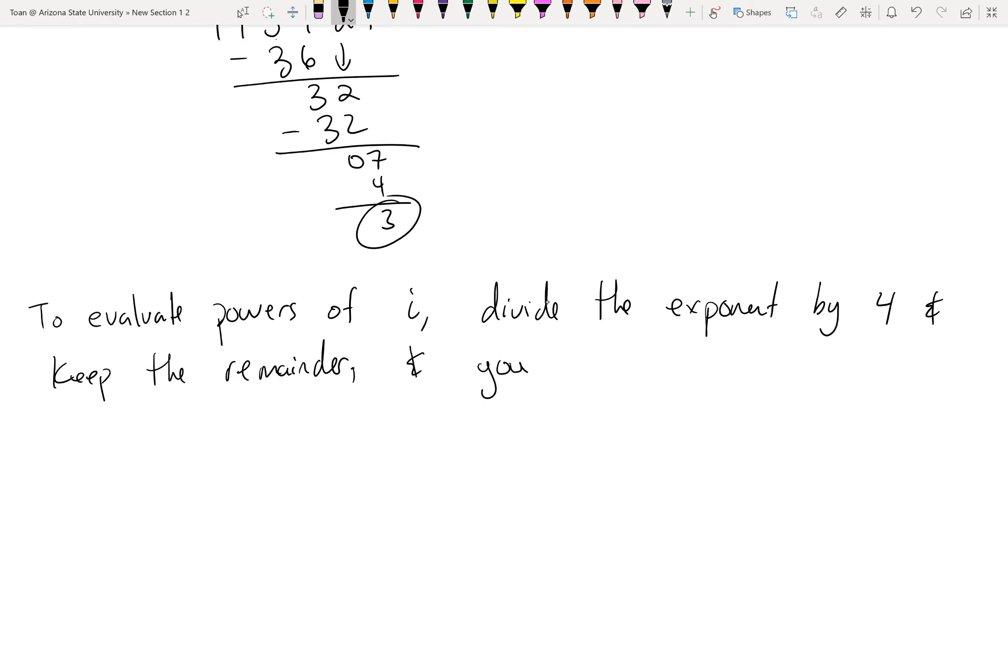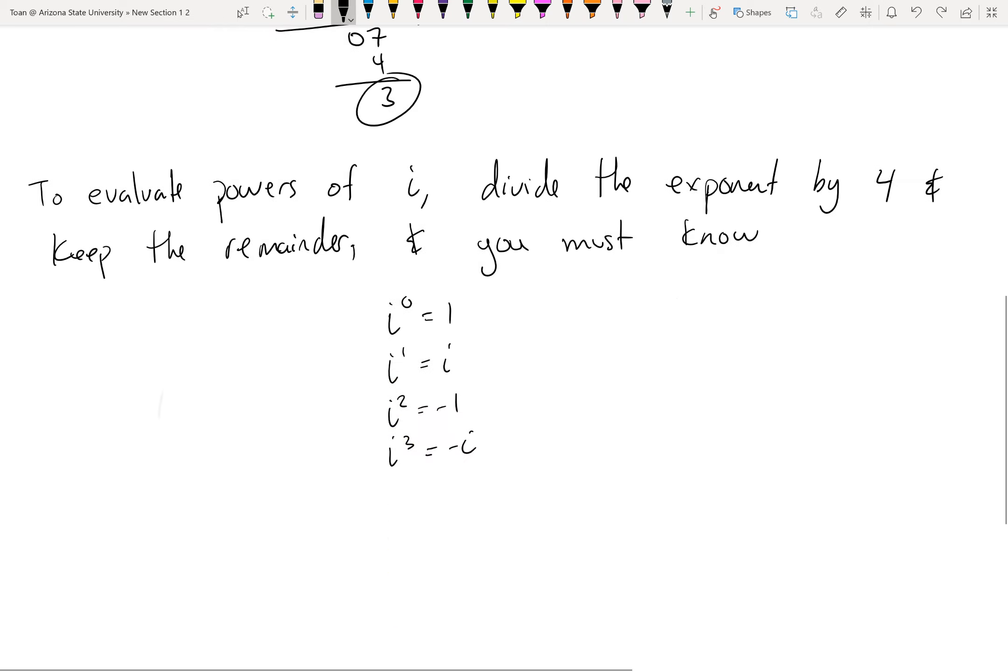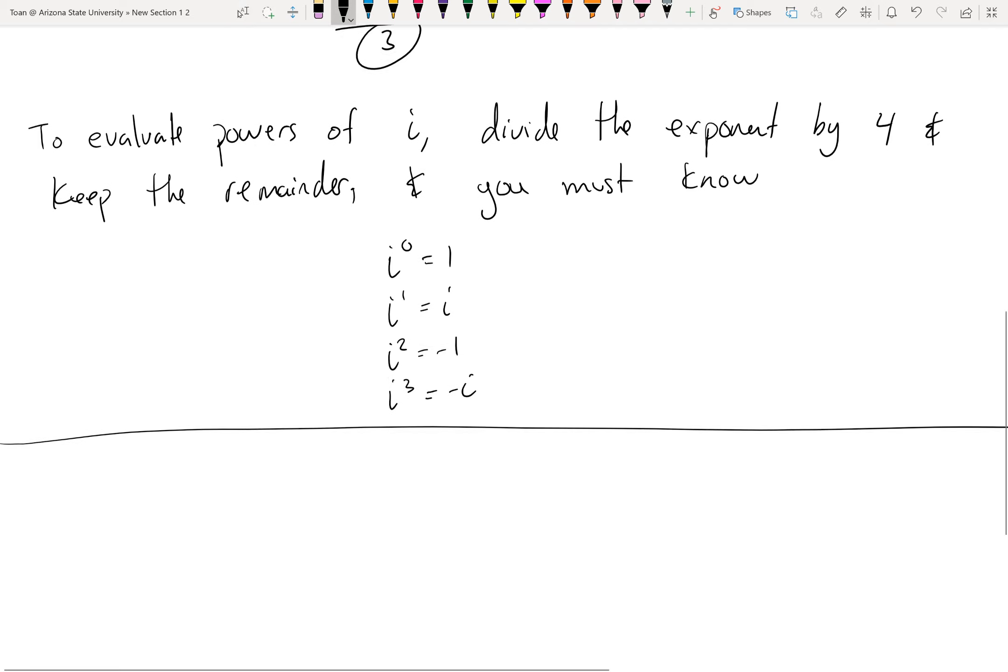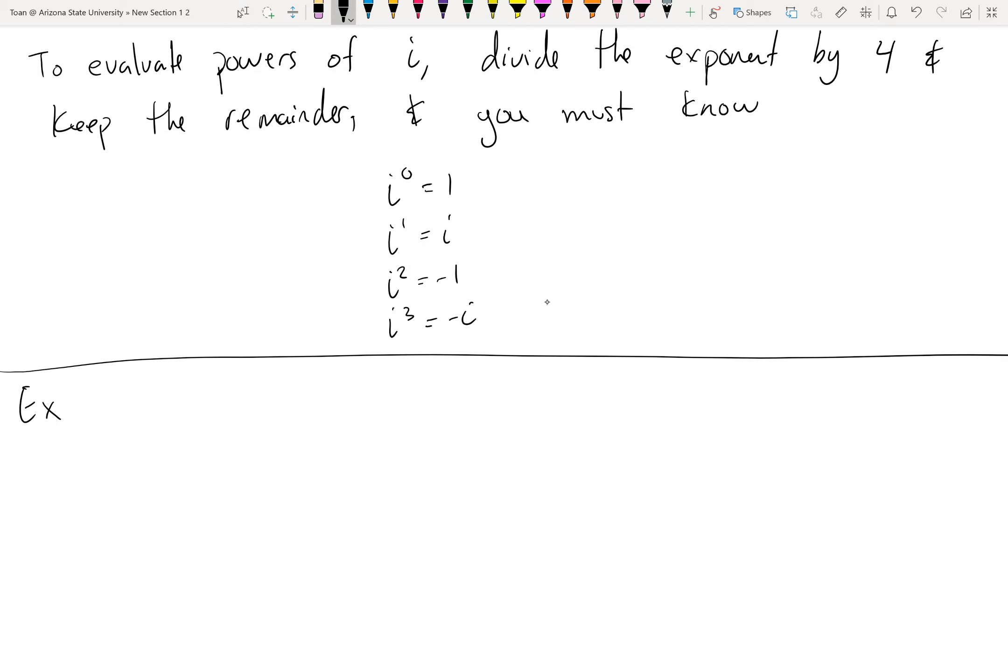And you must know i to the zero is one. i to the one is i. i squared is negative one. i cubed is negative i. This is important. You cannot do this if you don't know this list. But once you do know this list, evaluating powers of I should take, oh, ten seconds. Let's prove it. Let's do one last example. I'm going to make this number up on the spot.